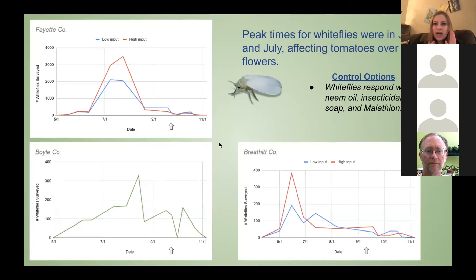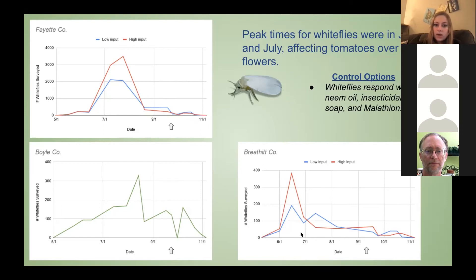Here is the whitefly data. The peak times for whiteflies were June and July, so the summer, and they affected tomatoes. The peaks for whiteflies were around 3,000 in Fayette County, while in Breathitt County and Boyle County they never even got up to 400 or 500, so they were mainly just a problem in Fayette County during the tomatoes. For the flowers, they weren't really much of a pest. I'm wondering if tunnel baking had an effect on whitefly populations, since in the baked counties they aren't a pest at all. For control, you can use neem oil, insecticidal soap, and Malathion works really well for whiteflies during peaks.